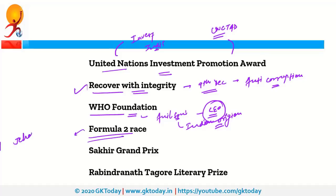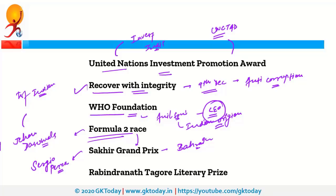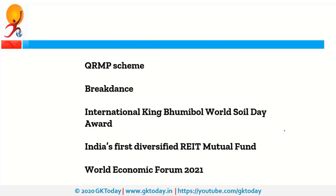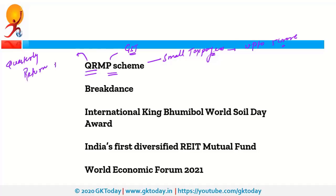Next, in Formula 2 racing, Jehan Daruvala created history as he became the first Indian to win a Formula 2 race at the Sakhir Grand Prix in Bahrain. Sergio Perez won the 2020 Sakhir Grand Prix. Next, Raj Kamal Jha was selected for the Rabindranath Tagore Literary Prize for his novel 'The City and The Sea.' Next, the QRMP scheme — Quarterly Return and Monthly Payment of taxes — is related to GST; it was announced by the central government for small taxpayers whose annual aggregate turnover is up to 5 crore rupees.